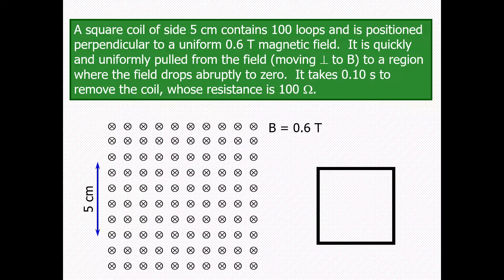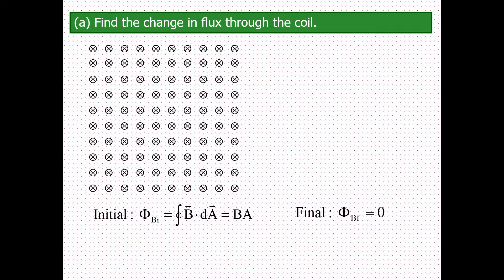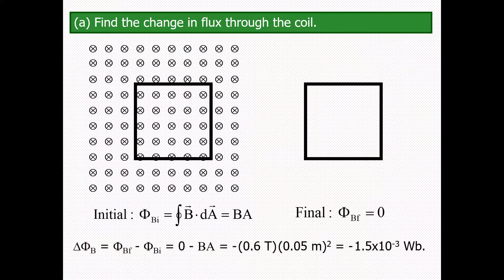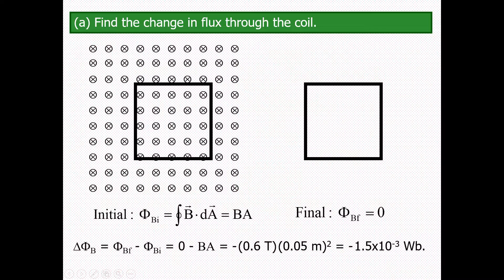We need to find the change in flux through the coil. The initial flux is Φ_i equals the integral of B·dA equals BA. The final flux Φ_f equals zero because when the loop has left the field there are no field lines passing through the loop. Therefore, ΔΦ equals Φ_f minus Φ_i equals zero minus BA.